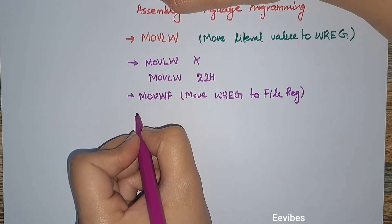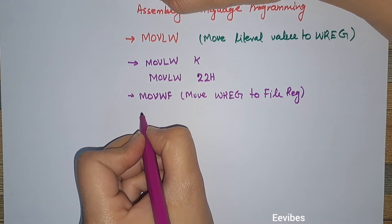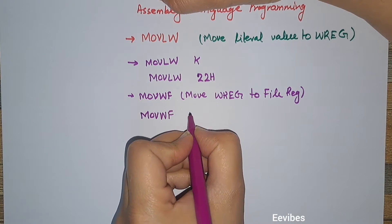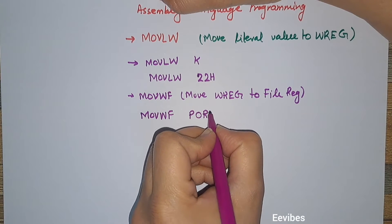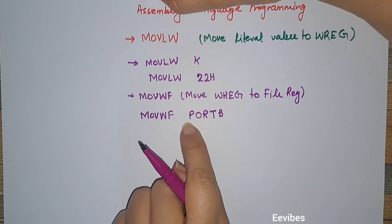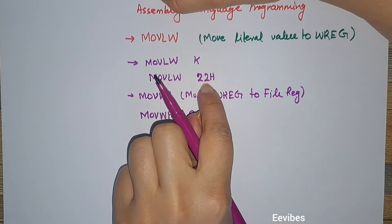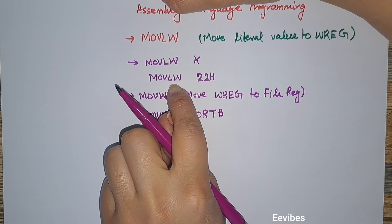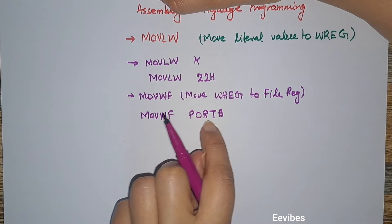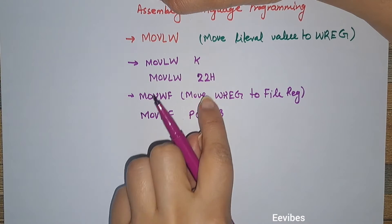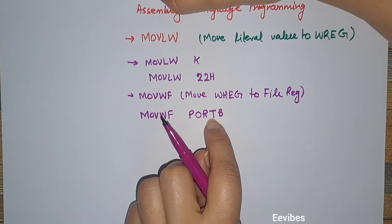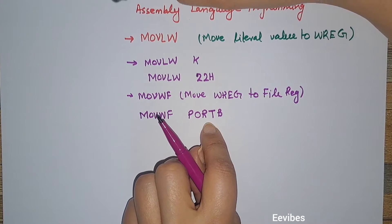To use this instruction, we write Move W to File. For example, if we write Port B as the file register, the first instruction puts 22 hex into the W register, and then this instruction copies or forwards that value of 22 hex to Port B.